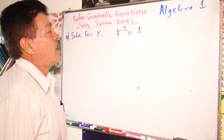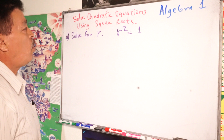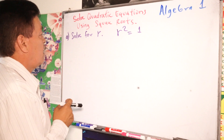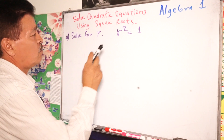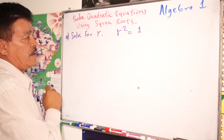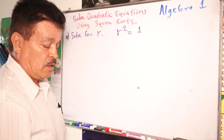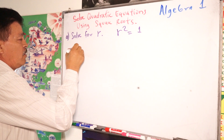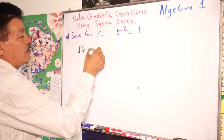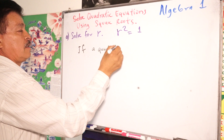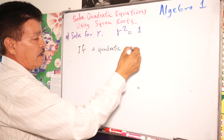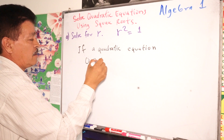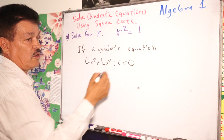Welcome to Algebra One. The topic is solving quadratic equations using square roots. As an example, we have one problem here: solve for r, where r squared equals one. Before we solve the problem, let me remind you something — for example, if a quadratic equation like ax squared plus bx plus c equals zero has...